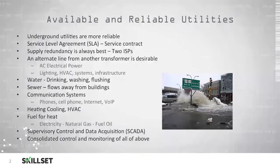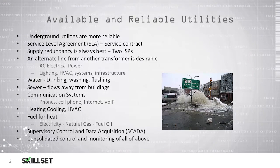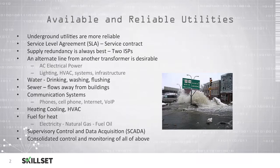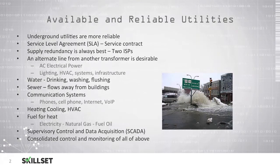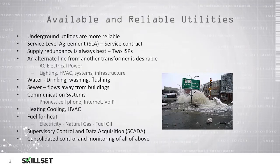You should also consider redundant lighting, redundant HVAC systems, and a redundant infrastructure so that your business can continue to function even if you lose utilities. You should make sure that you have sufficient water for drinking, washing, and flushing toilets, and also make sure that your sewer system flows away from the building, not towards the building.